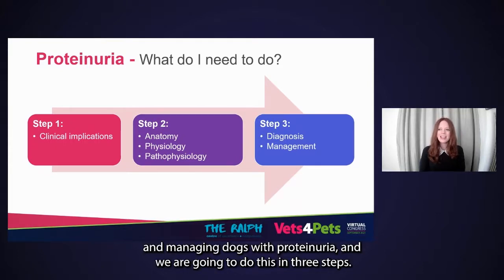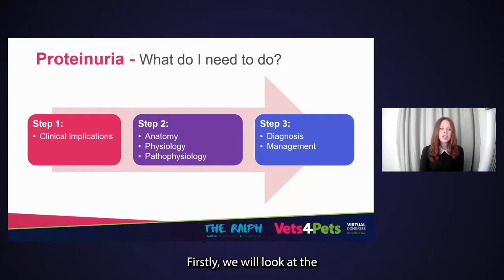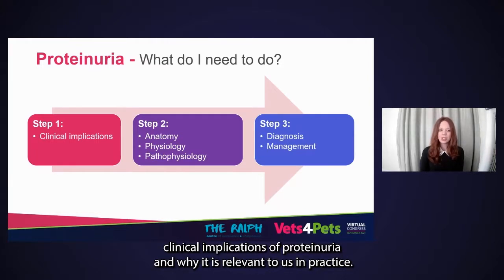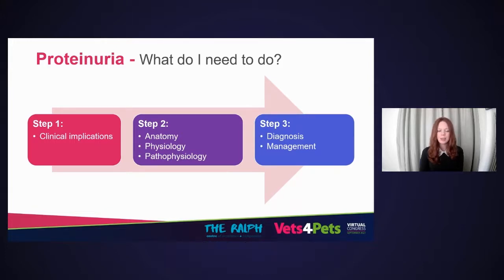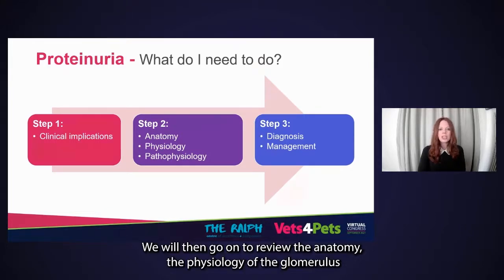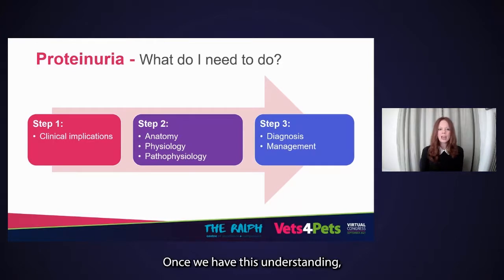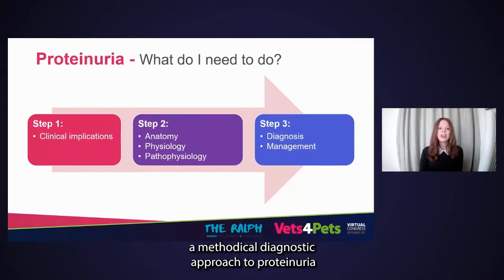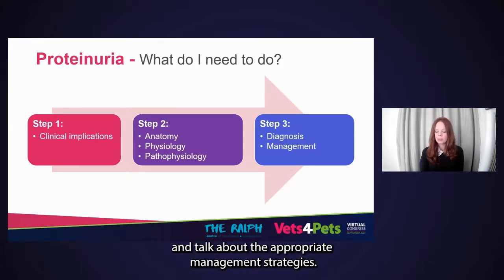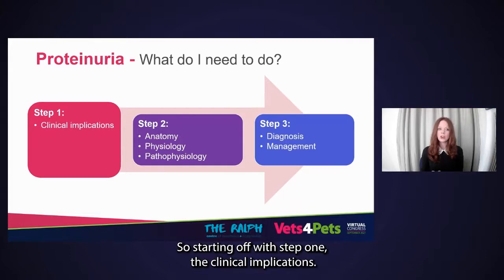We are going to do this in three steps. Firstly, we will look at the clinical implications of proteinuria and why it is relevant to us in practice. We will then review the anatomy and physiology of the glomerulus, and then discuss the pathophysiology of proteinuria. Once we have this understanding, we can construct a methodical diagnostic approach and talk about appropriate management strategies. So starting off with step one: the clinical implications.